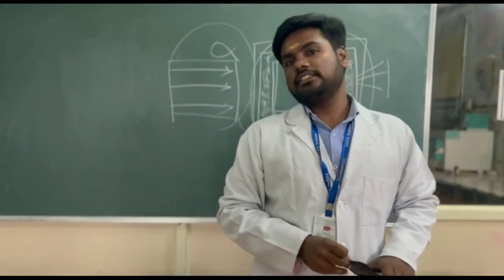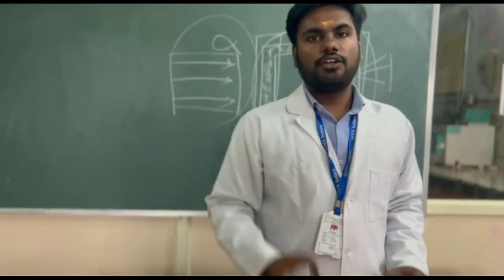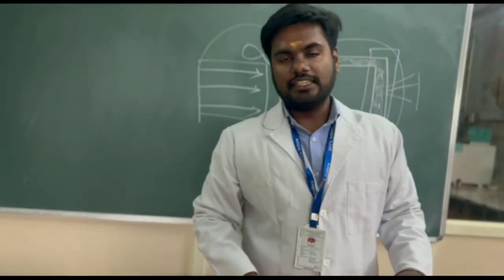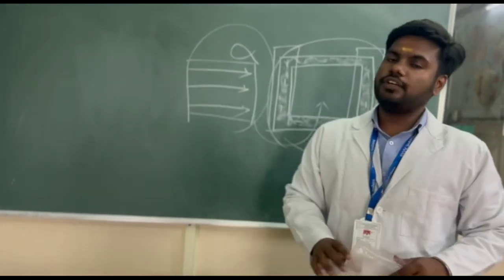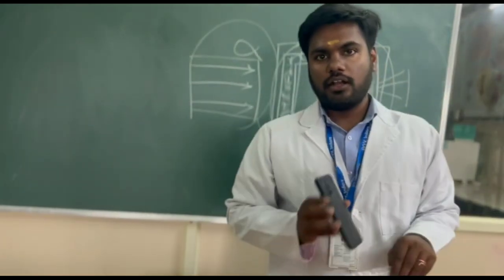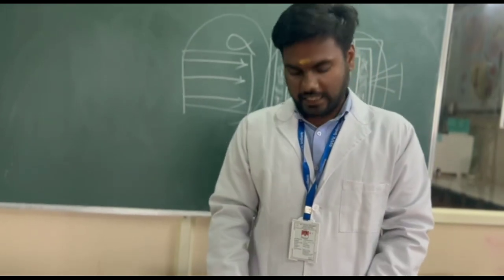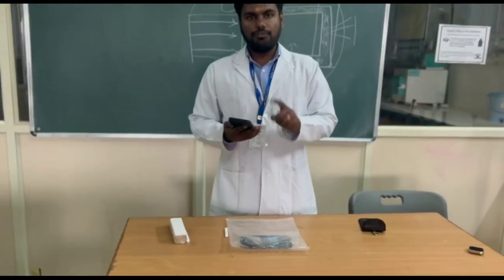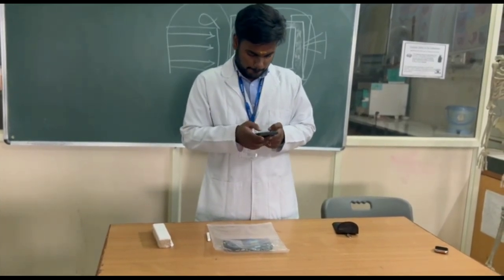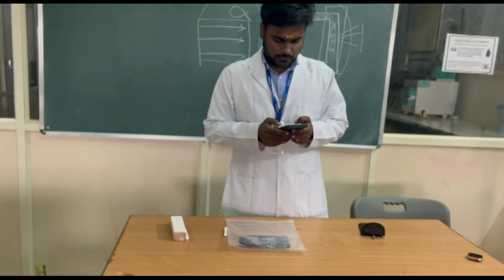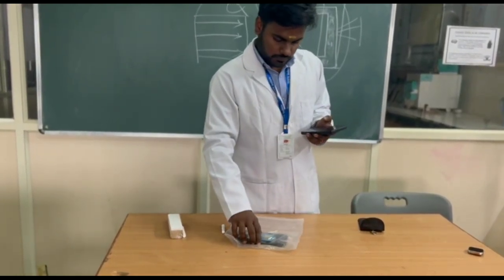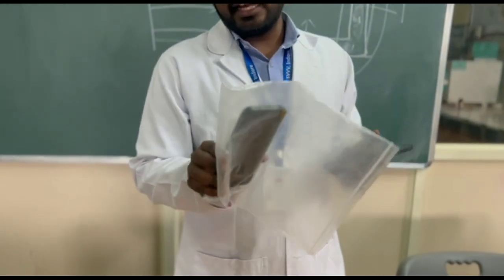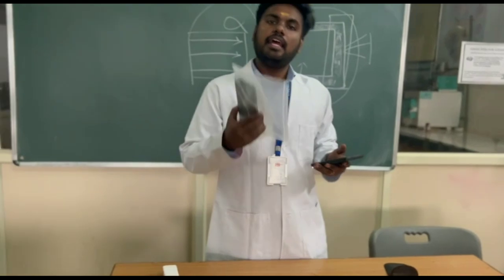Now let's have a practical examination of how this works. I have two phones. In our school curriculum, we learnt that plastic is an insulator, so it should stop electricity. Let's first examine whether phone signals are blocked by a plastic cover. I am calling phone 2 from phone 1. We can clearly see that phone 2 can contact phone 1 easily even though it is covered by an insulating plastic pack.